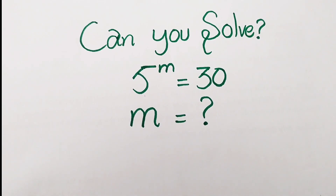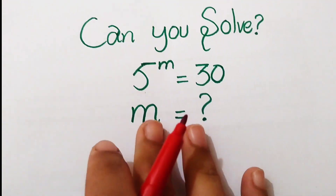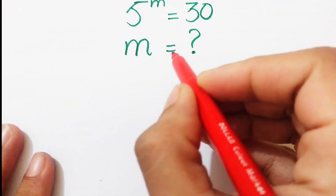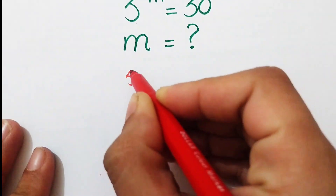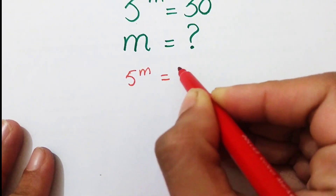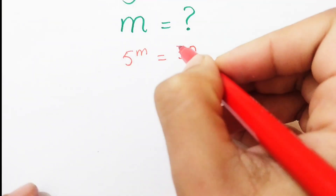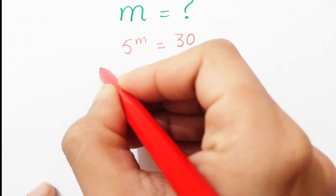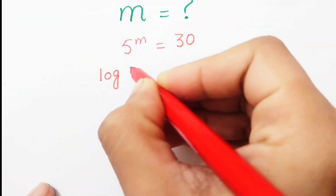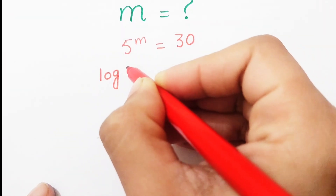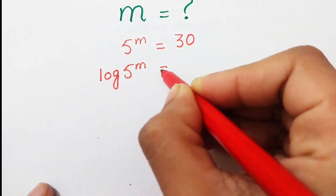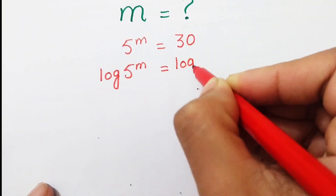Hello everyone, welcome to my channel. Today we are going to solve this equation for the value of m. First of all, we write it as 5^m equals 30. Now we take log on both sides and write it as log(5^m) equals log(30).